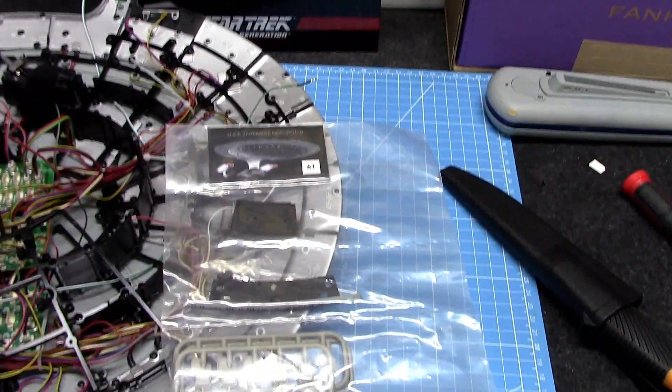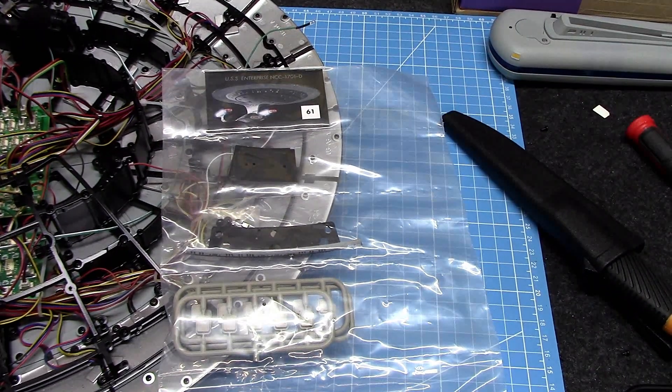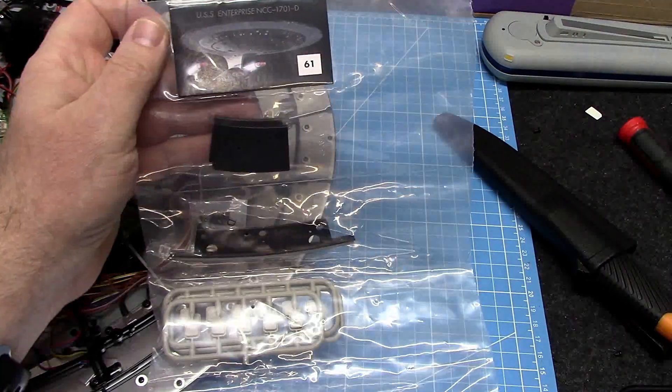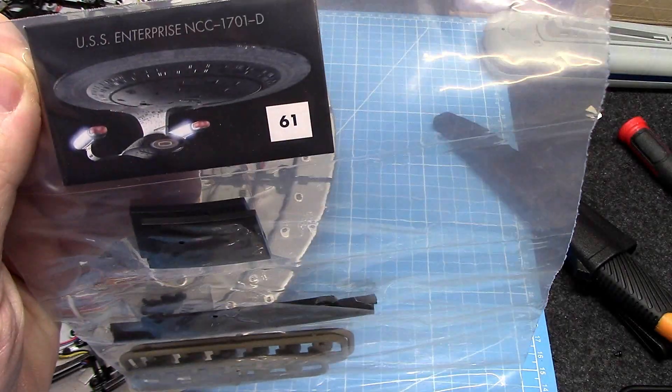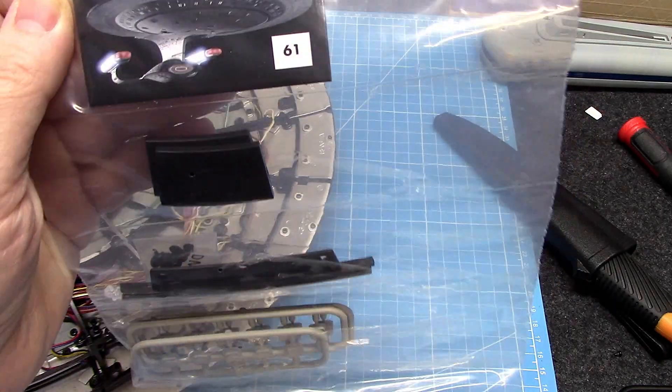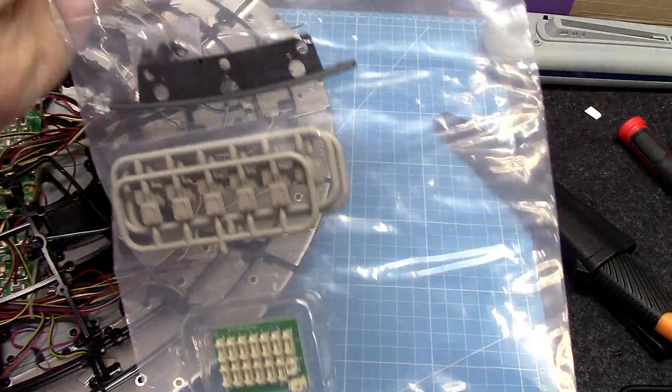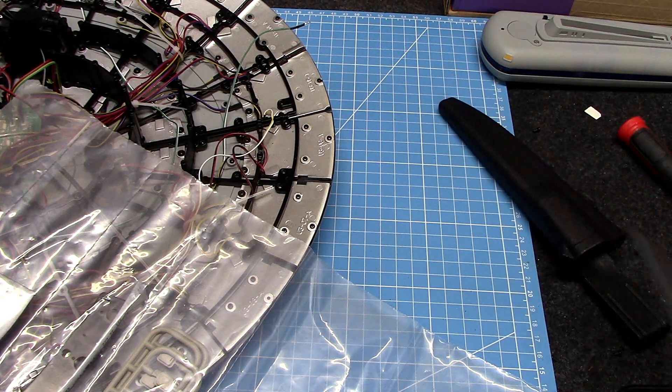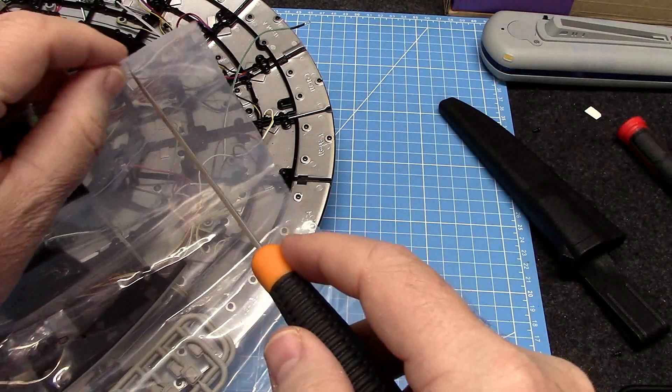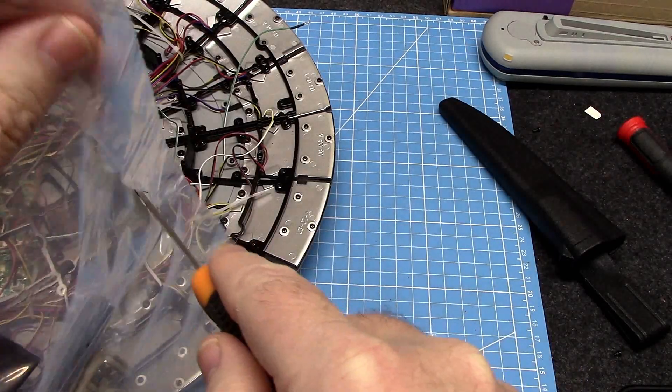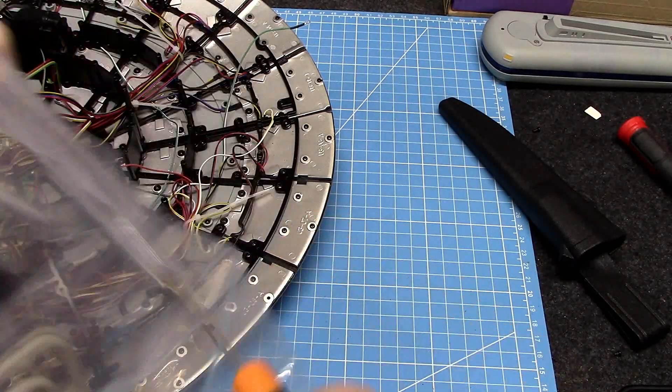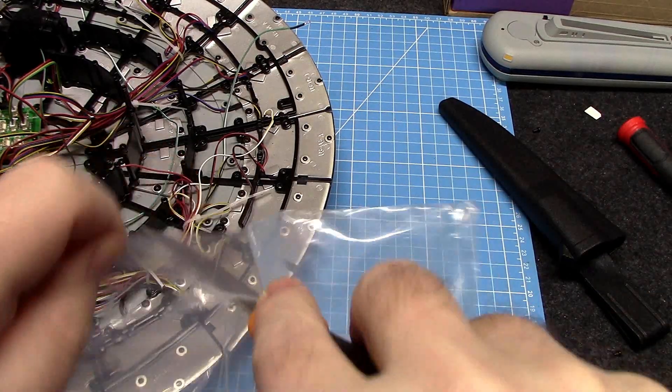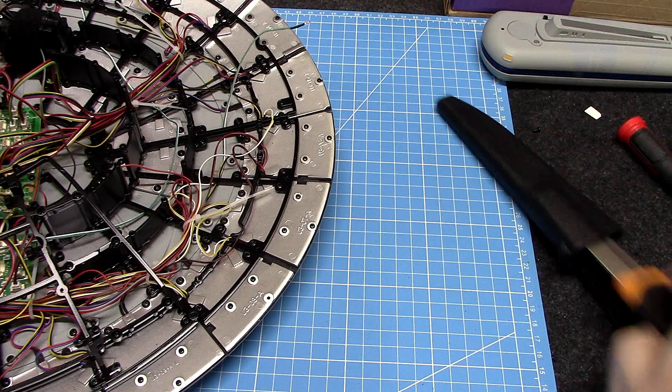Welcome back to Build the Enterprise D from Fanhome. Excuse my voice, I am fighting off a cold still. Pack 61, and this is going to be pretty raw footage right here. I probably won't do a lot of editing. At this point I don't know. What the heck, okay that knife needs to be sharpened.